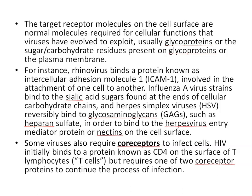Similarly, influenza A virus binds to sialic acid found at the end of the cellular carbohydrate chain. Then, herpes simplex virus (HSV) reversibly binds to glycosaminoglycans such as heparin sulfate, which are present on the cell surface. Some viruses, for example HIV, also require coreceptors to infect cells.